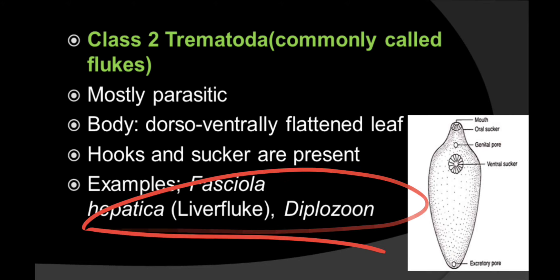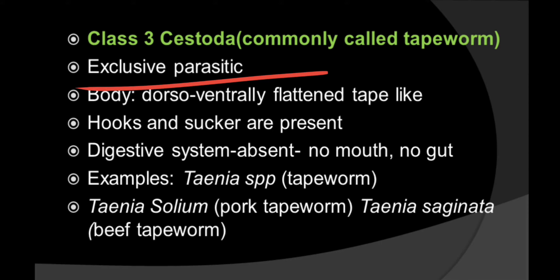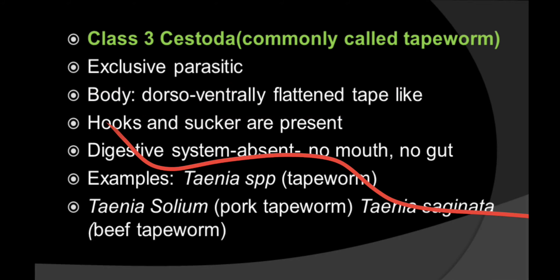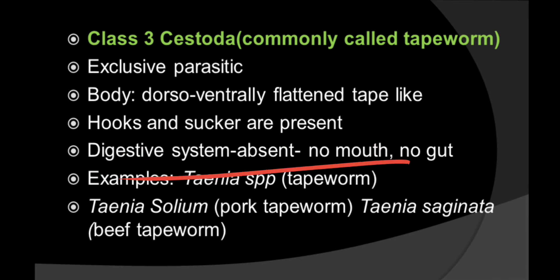The next class is Cestoda, commonly called tapeworms. All animals in this class are exclusively parasitic. The body is dorsoventrally flattened, looking like a tape. Hooks and suckers are present — this is an important characteristic of this class. The digestive system is absent — no mouth, no gut — because they directly absorb nutrition from the host body.